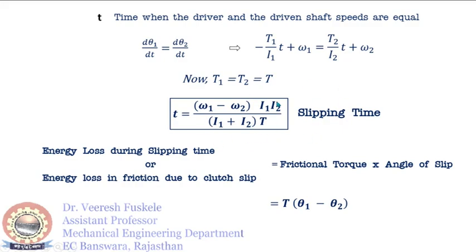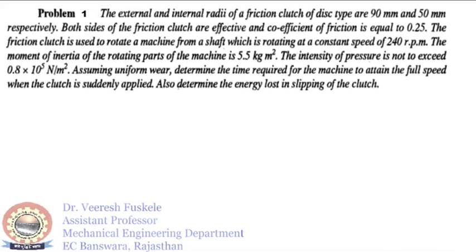Now let us solve a numerical problem related to clutch. The problem: the external and internal radii of a friction clutch of disc type are 90 mm and 50 mm respectively. Both sides of the friction clutch are effective and the coefficient of friction is 0.25. The friction clutch is used to rotate a machine from a shaft rotating at a constant speed of 240 rpm. The moment of inertia of the rotating parts of the machine is 5.5 kg·m². The intensity of pressure is not to exceed 0.8×10⁵ N/m². Assuming uniform wear, determine the time required for the machine to attain full speed when the clutch is suddenly applied, and also determine the energy lost in slipping.